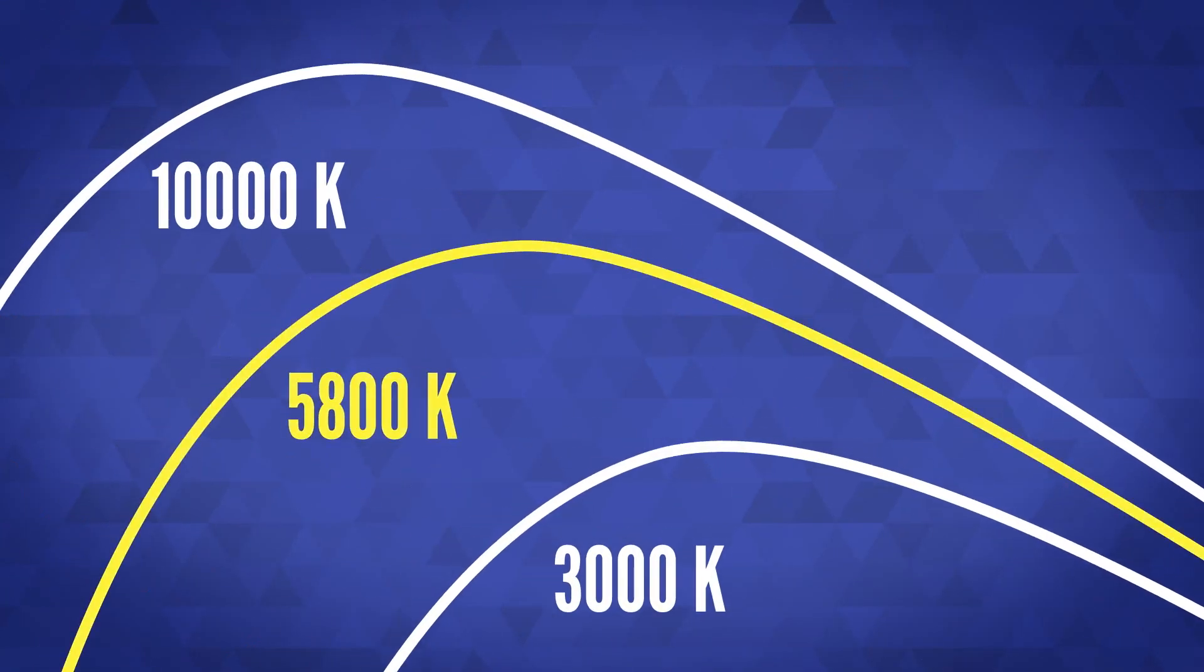Our sun is about 5800 Kelvin, and the radiation it gives off is centered in the visible range. Which is exactly why it's the visible range, because that's what we evolved to see. But I digress.